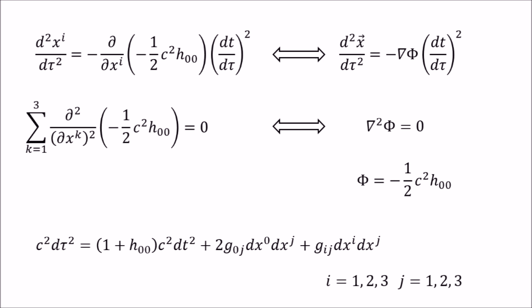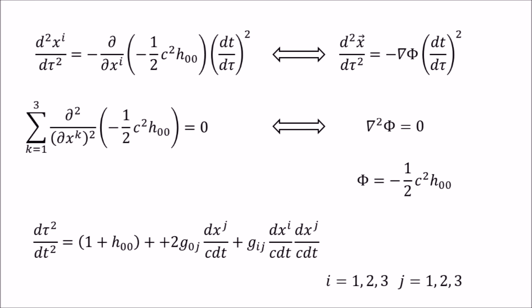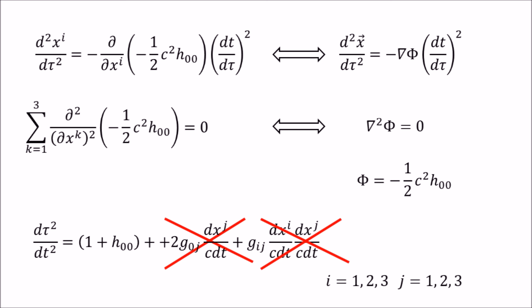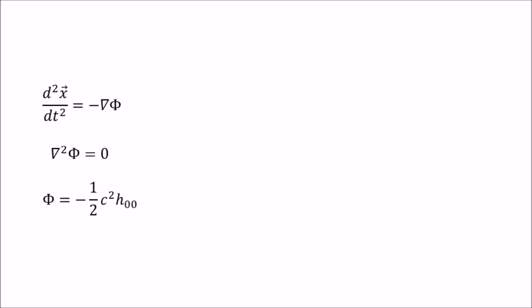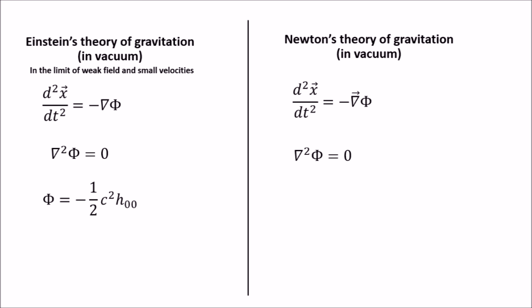Dividing both sides by c squared dt squared, and remembering the low velocity limit, we end up with this. Inserting these back into the geodesic equation, we see that the term 1 plus h zero zero cancels out. So, finally, we end up with these sets of equations, which match Newton's equations perfectly.